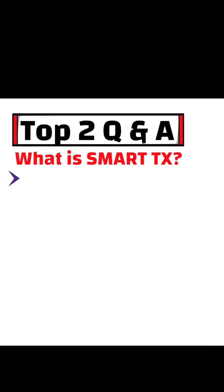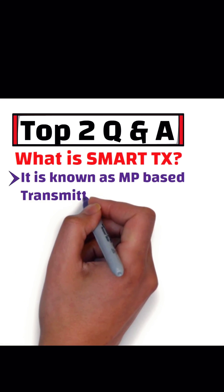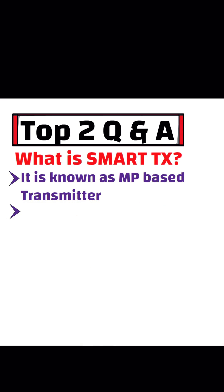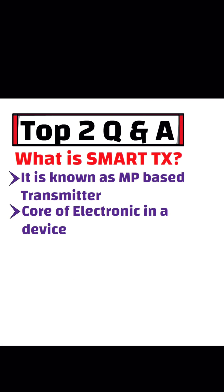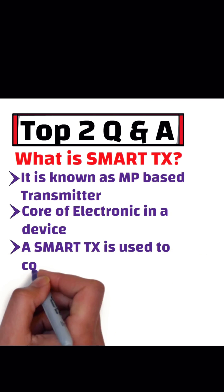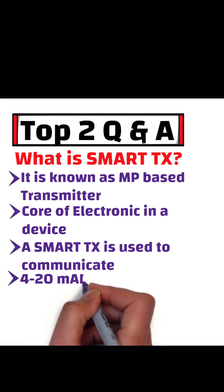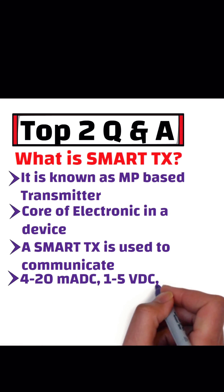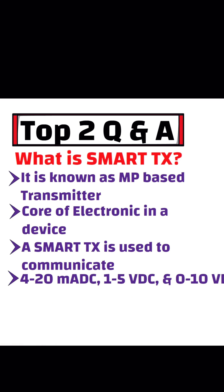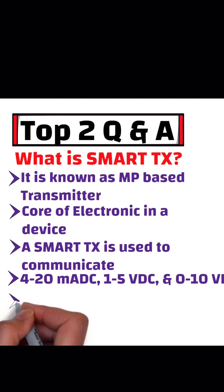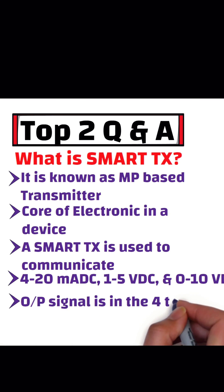A smart transmitter is known as a microprocessor-based transmitter and is the core of electronics in a device. A smart transmitter is used to communicate and is also used for the calibration process in remote areas. It sends signals in the form of 4-20 milliampere DC, 1-5 volt DC, or 0-10 volt DC, with the primary output signal being 4-20 milliampere DC.